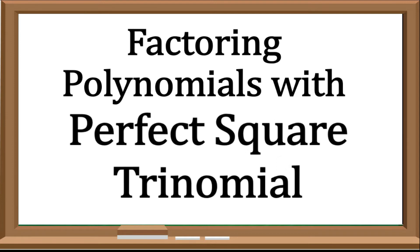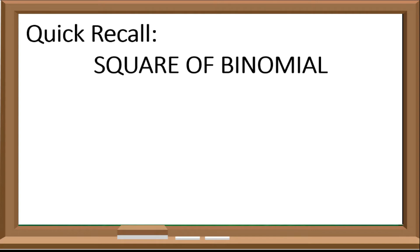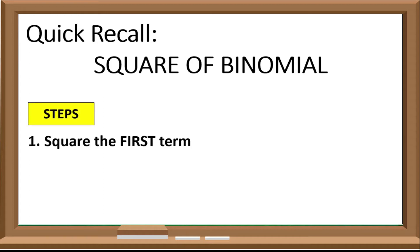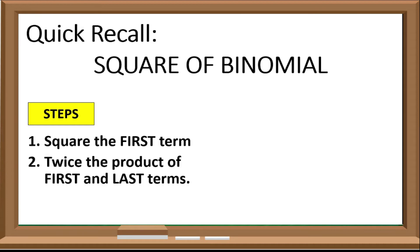Before we start the lesson, there are things that we should know — mathematical concepts that we should remember. That is squaring a binomial. In squaring a binomial, we should follow these steps: one, square the first term; second, twice the product of first and last terms; and lastly, square the last term.